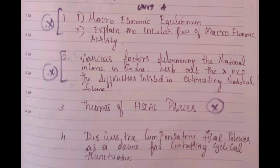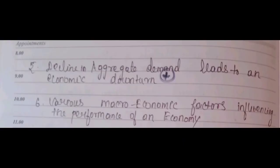Discuss the compensatory fiscal policy and its role in controlling cyclical fluctuation. Declined aggregate demand leads to an economic downturn. The stock market is a key macroeconomic factor influencing the performance of the economy. Macroeconomics, fiscal policy, aggregate demand, and national income are very important.